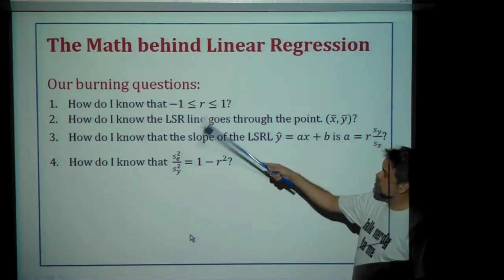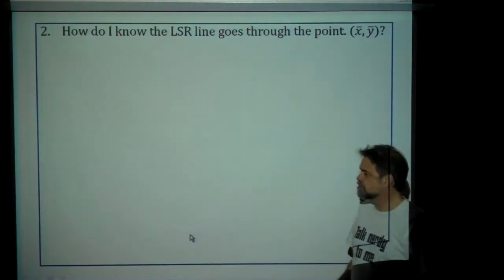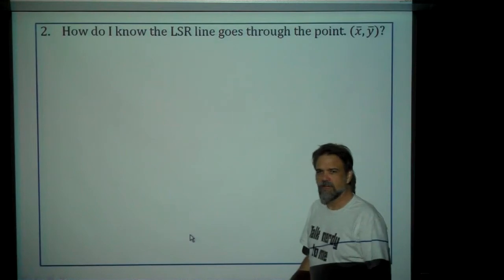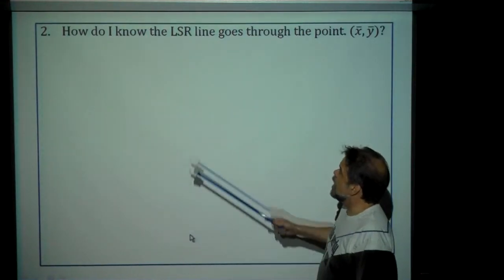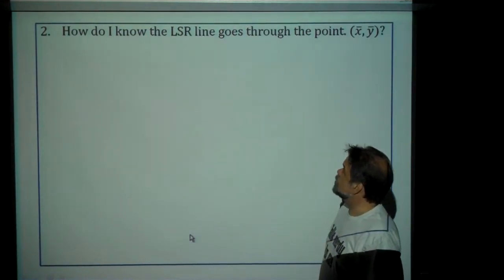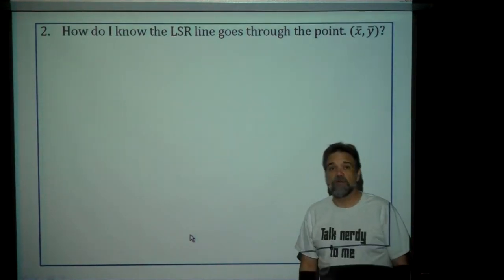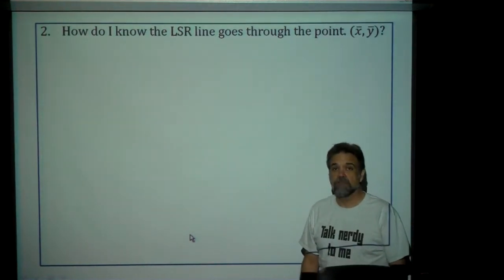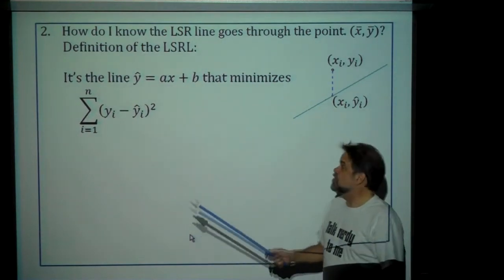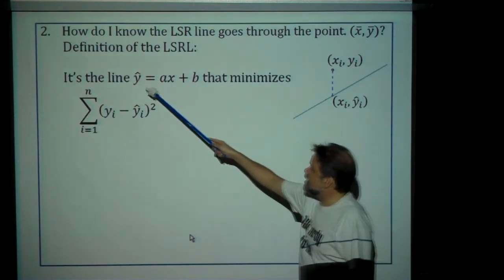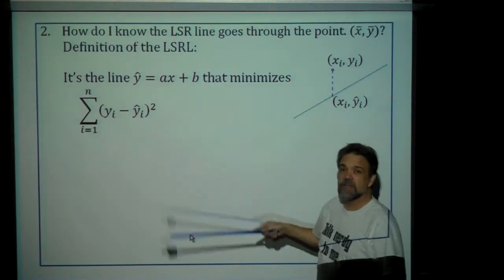So let's start. We have questions one, two, three, four — so naturally, let's start with number two. I want to know how I know that the least squared regression line goes to the point x-bar, y-bar. Well, first off, let's remember what the least squared regression line is. It's this line: y-hat equals ax plus b.